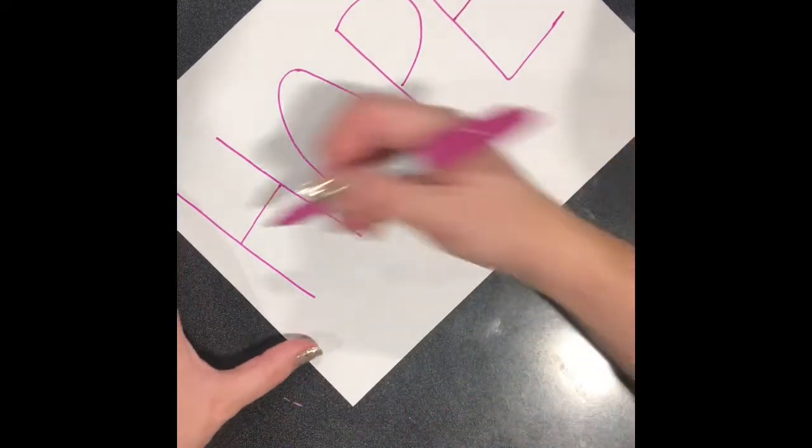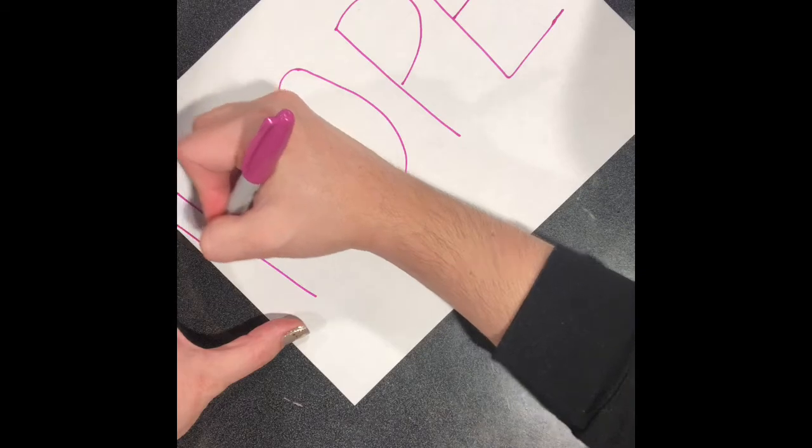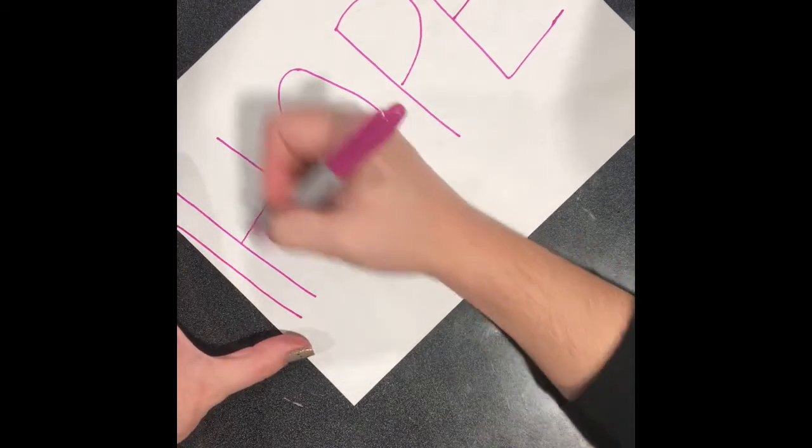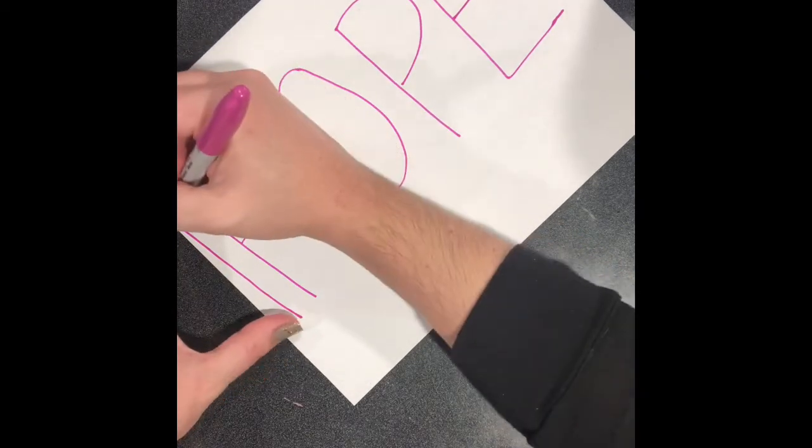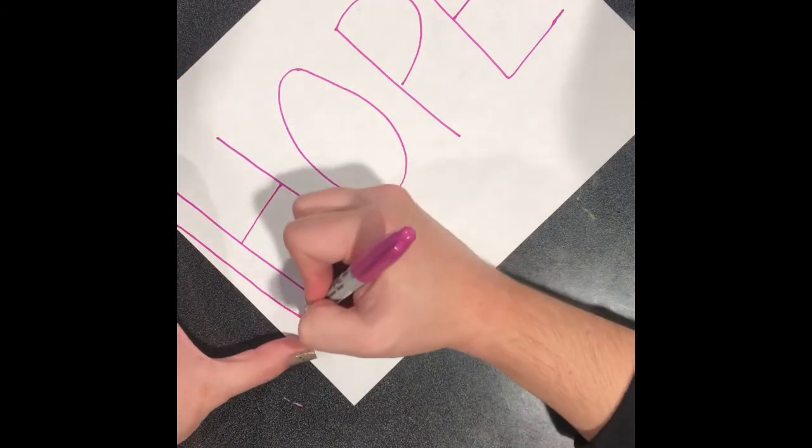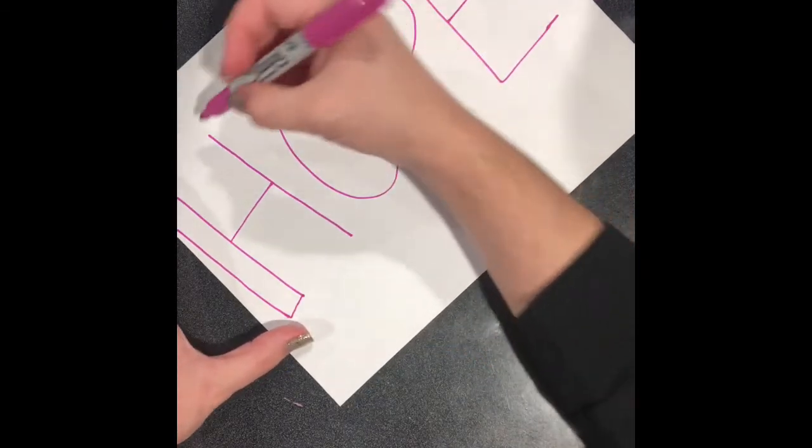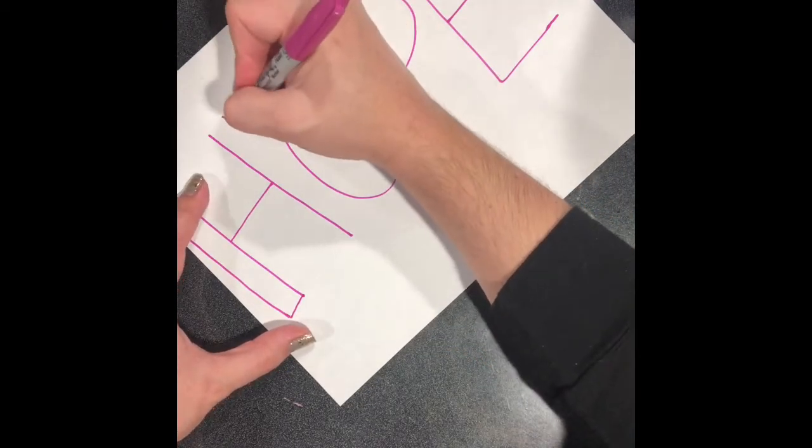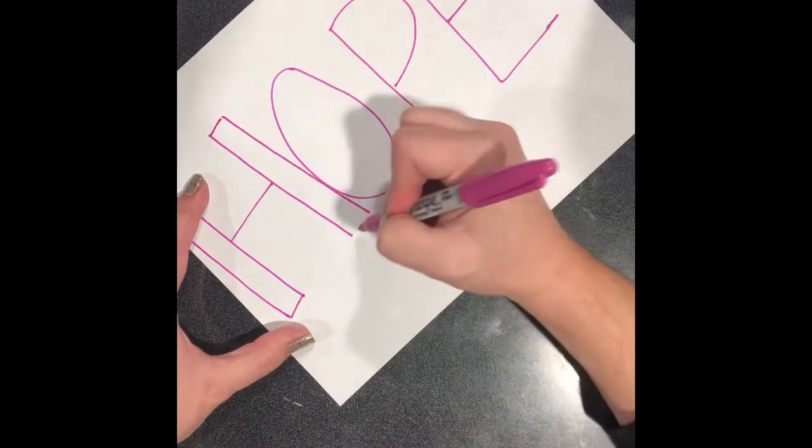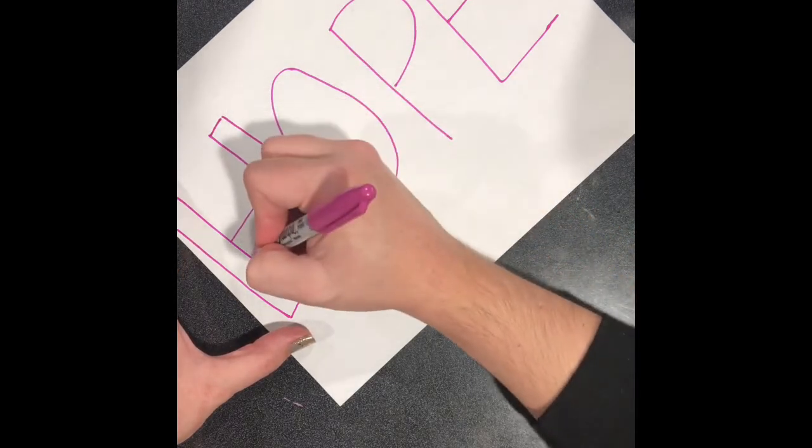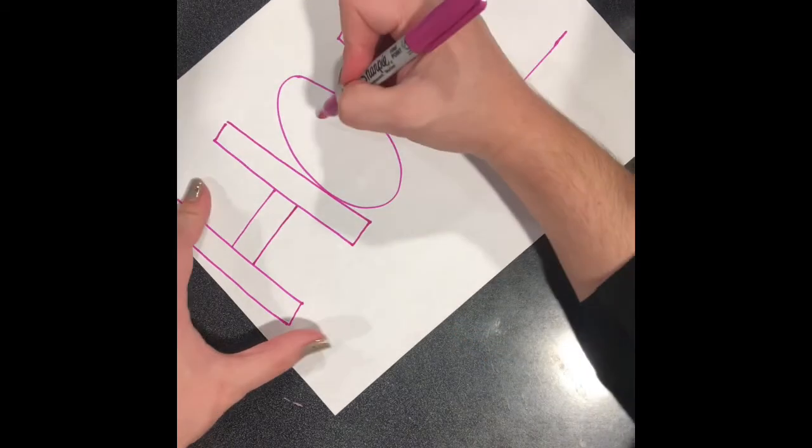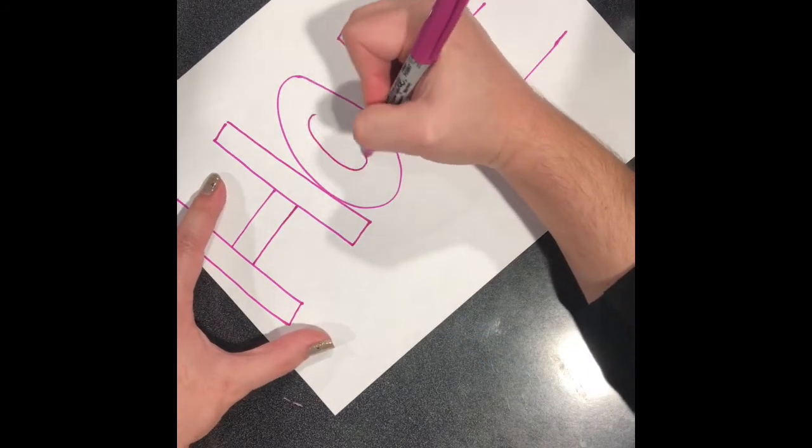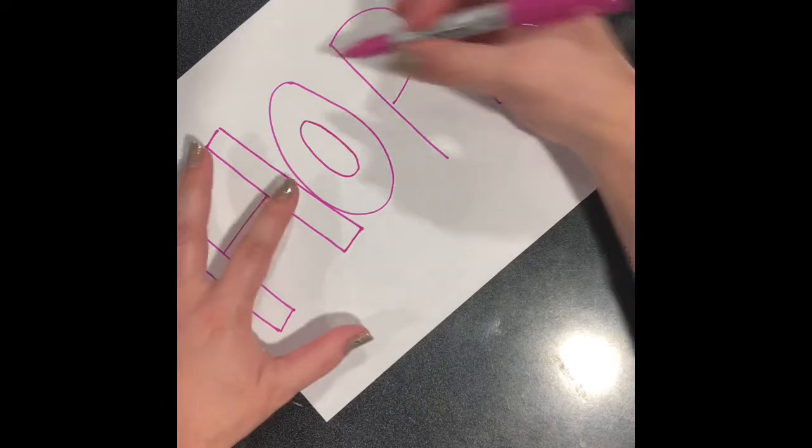Alright, now to make these bubble letters, I'm going to double all the sticks. So here on my H, I repeated that vertical line. I'm going to cross that off, and now I have a block letter. I'm going to do the same thing over here on this side of the H. It's okay if my letters end up touching each other. O's super simple. You just draw a smaller O inside.